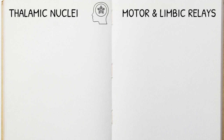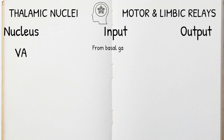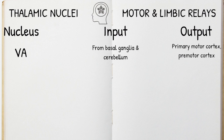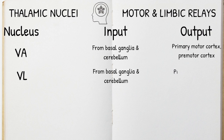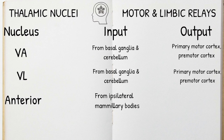We are now going to discuss the inputs and outputs of nuclei involved in both motor and limbic relay. The ventral anterior nucleus is involved in motor relay, and it receives input from both the cerebellum and the basal ganglia, and outputs stimuli to both the motor and premotor cortices. Similarly, the ventral lateral nucleus is involved in motor relay, and it receives input from both the cerebellum and the basal ganglia, with outputs to the motor and premotor cortices. The anterior nucleus is involved in limbic relay, and it receives input from the ipsilateral mammillary bodies, with its outputs going to the cingulate gyrus, the parietal cortex and the prefrontal cortex.